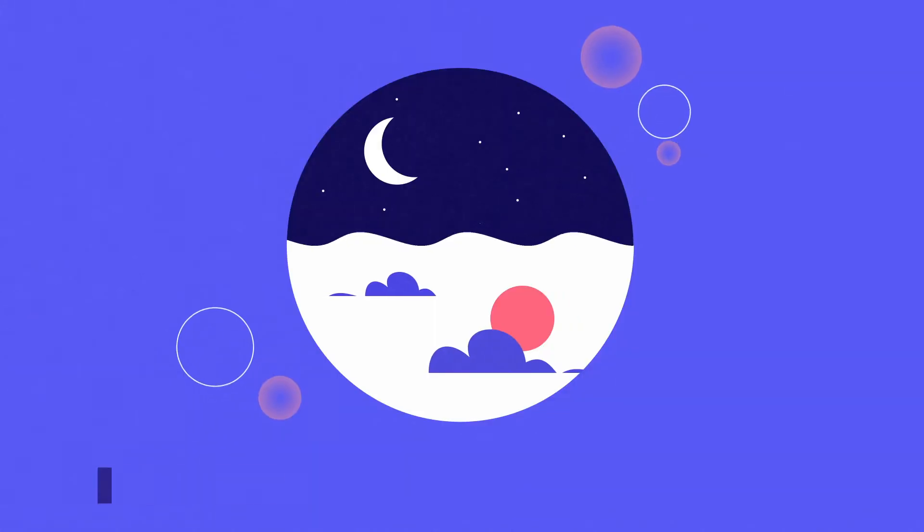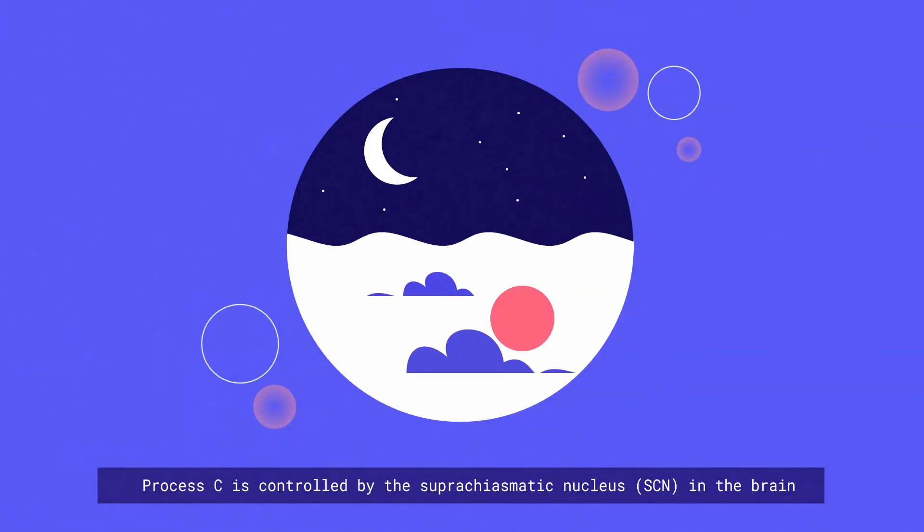Process C refers to our circadian rhythm, which is a 24-hour cycle that oscillates like a sine wave. There are many important bodily processes that follow this 24-hour cycle, including body temperature, digestion and hormone production.